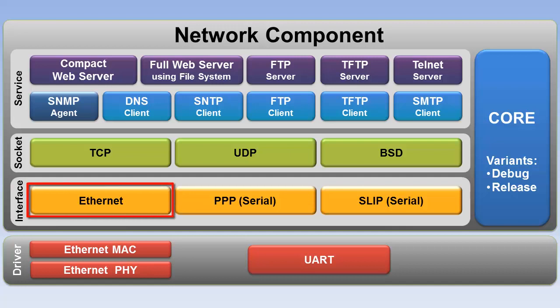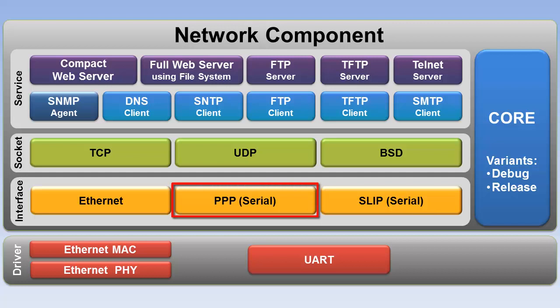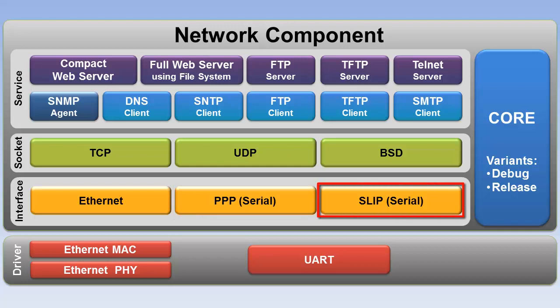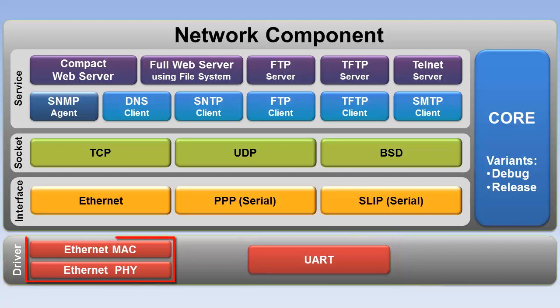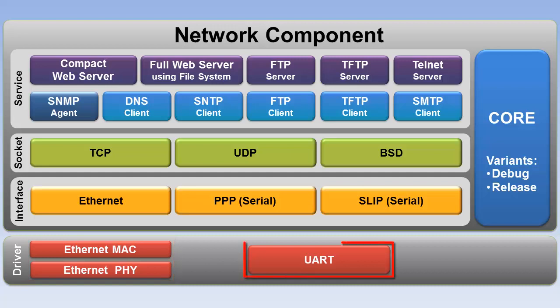The physical interface can be either Ethernet or serial. Ethernet connects to a LAN or local area network. PPP is the point-to-point protocol that only connects two network devices directly. SLIP is the serial line internet protocol. A driver provides the device-specific hardware interface. For Ethernet, an Ethernet MAC and PHY are required. UART is used for SLIP or PPP. The network core is available in a debug variant with extensive diagnostic messages; the release variant omits this diagnostic information.